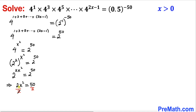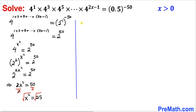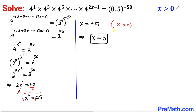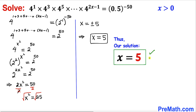Let's divide both sides by 2, giving us x squared equals 25. Taking a square root on both sides, x equals positive or negative 5. But we know x must be greater than 0, so we pick the positive value. Therefore our solution is x equals positive 5.